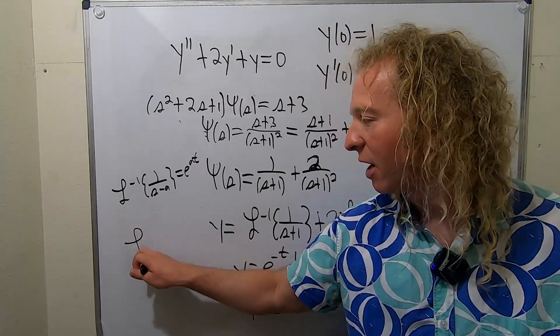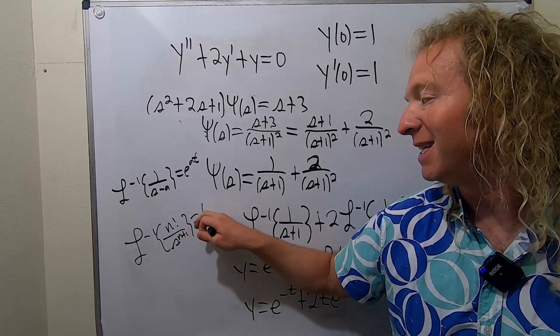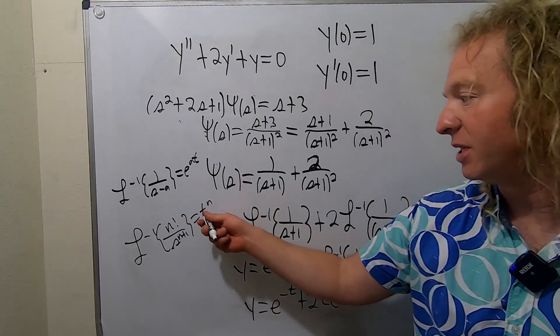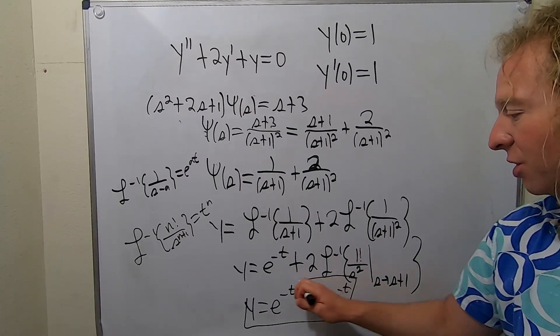If you have inverse Laplace of N factorial over S to the N plus one, that's T to the N. So here it's one factorial. So it's T to the one. Okay. So that's how you get the T. And that would be the solution to the DE.